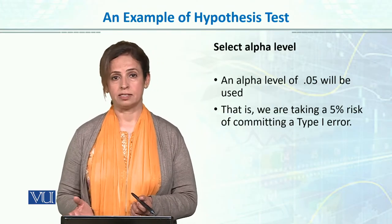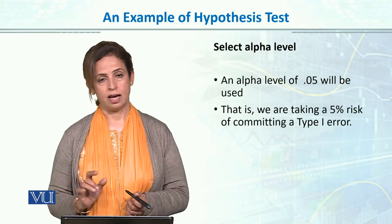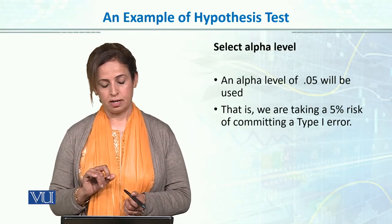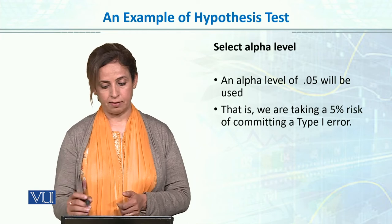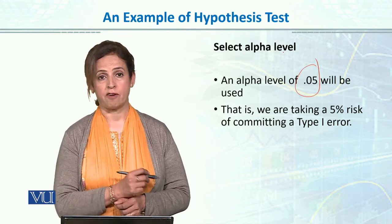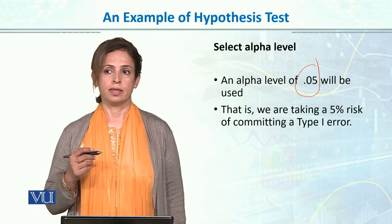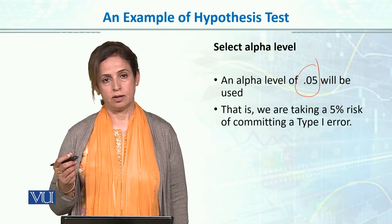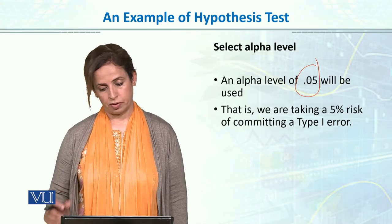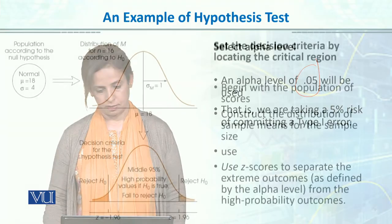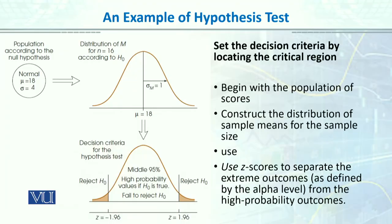The second step is to select the alpha level. Now that we have formed the null and alternative hypotheses, we select the alpha level. I have told you that mostly we use 5% alpha. So we have a critical region of 5% — we accept a 5% risk of committing a Type 1 error. The third step is to set the decision criteria.